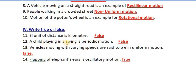A child playing in a swing is periodic motion. If a child is playing in a swing, that is periodic motion. Oscillation is a particular time, that is periodic motion. So this is false - it's oscillatory motion.